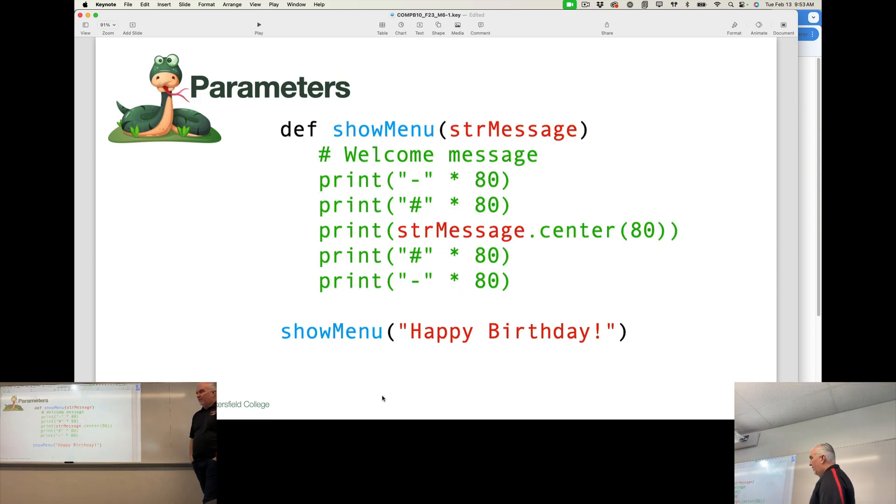So if I have a function called showMenu and I give it a parameter called strMessage, what that means is this variable is now available inside and only inside this function. If I have another variable somewhere else in my program called strMessage, those two won't conflict with each other. They won't ever touch because this only lives inside the function.